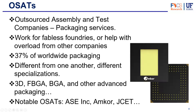Currently OSATs do about 37% of worldwide packaging. The problem with OSAT companies is that they're at the back end of the chain — so if there's a lot of demand they get a lot of work, but if the market is not as fast, they will feel the consequences first. OSATs are also very different from one another. Some companies work with several OSATs at the same time depending on their packaging needs — some are better with 3D, some with Flip-chip BGA or BGA, different types of advanced packaging.